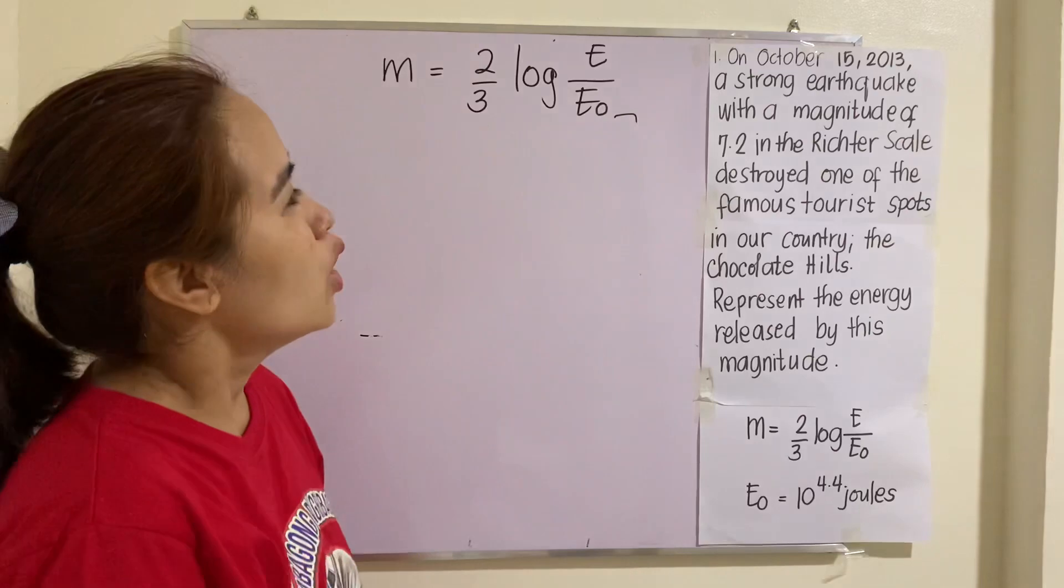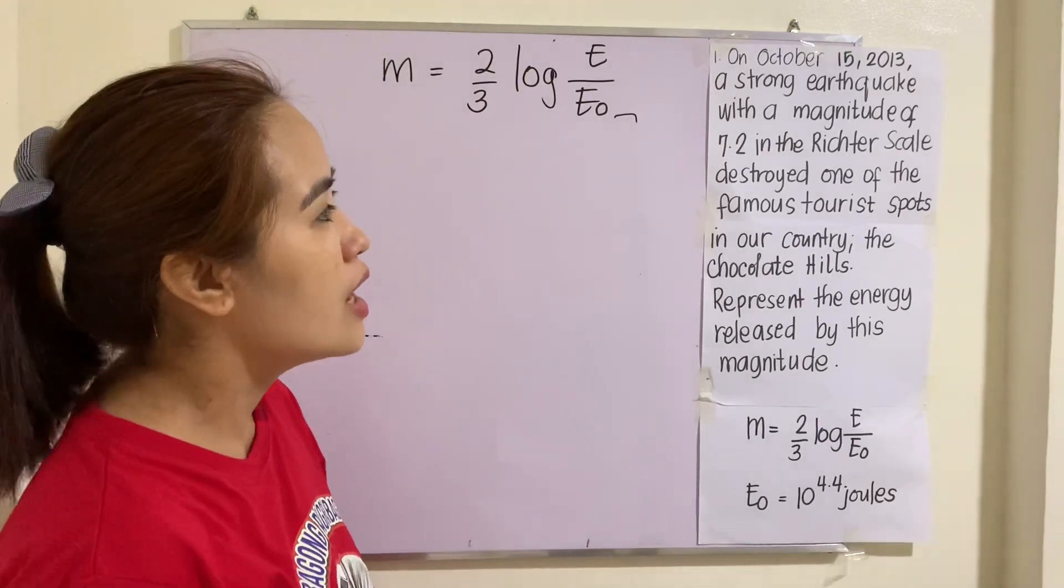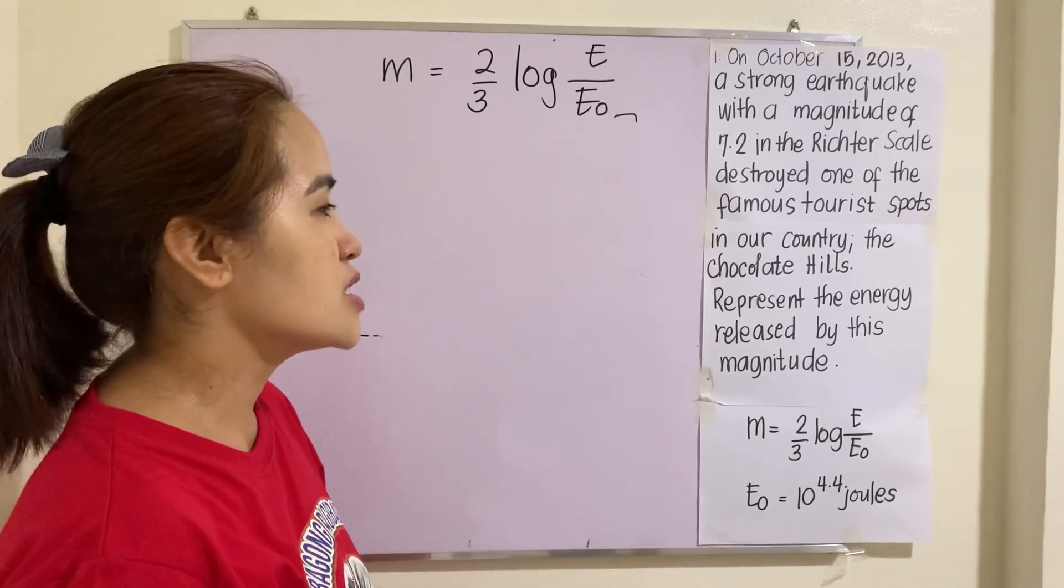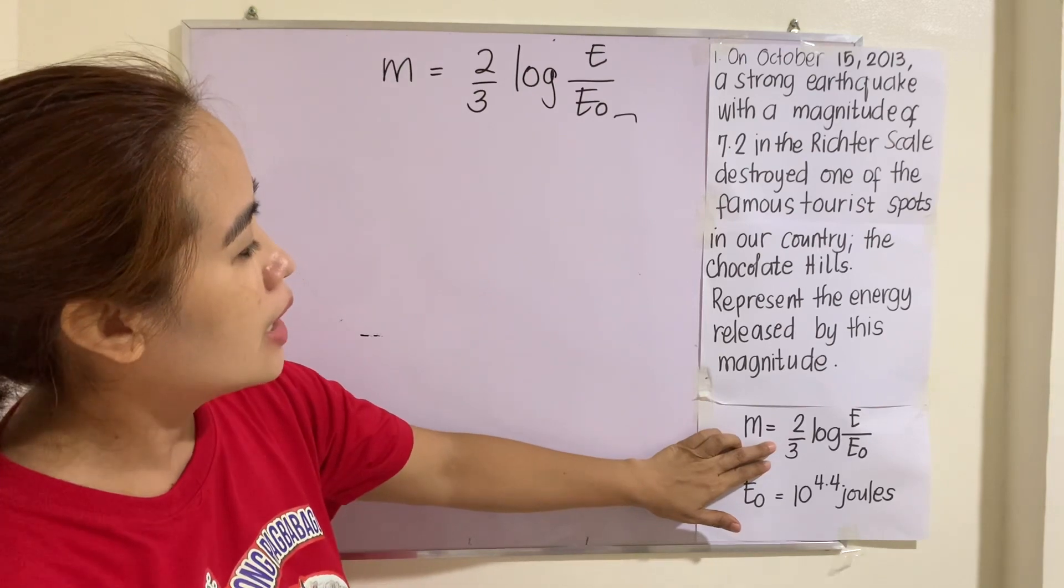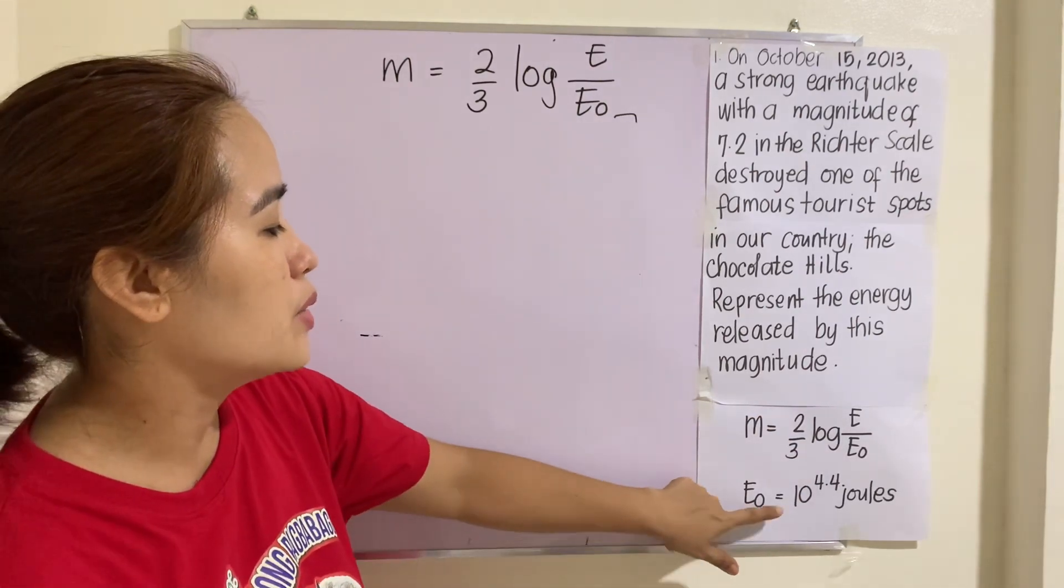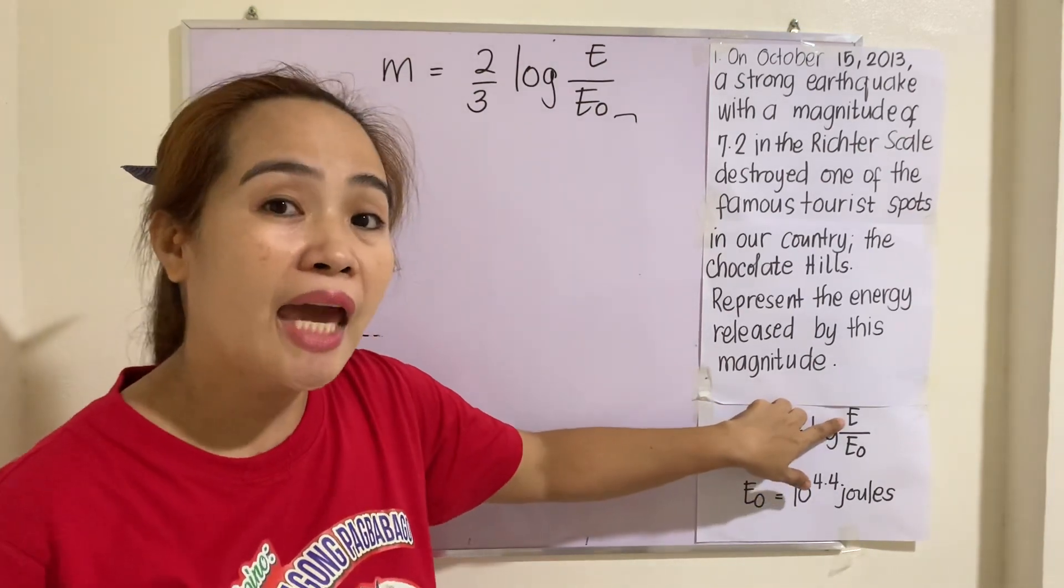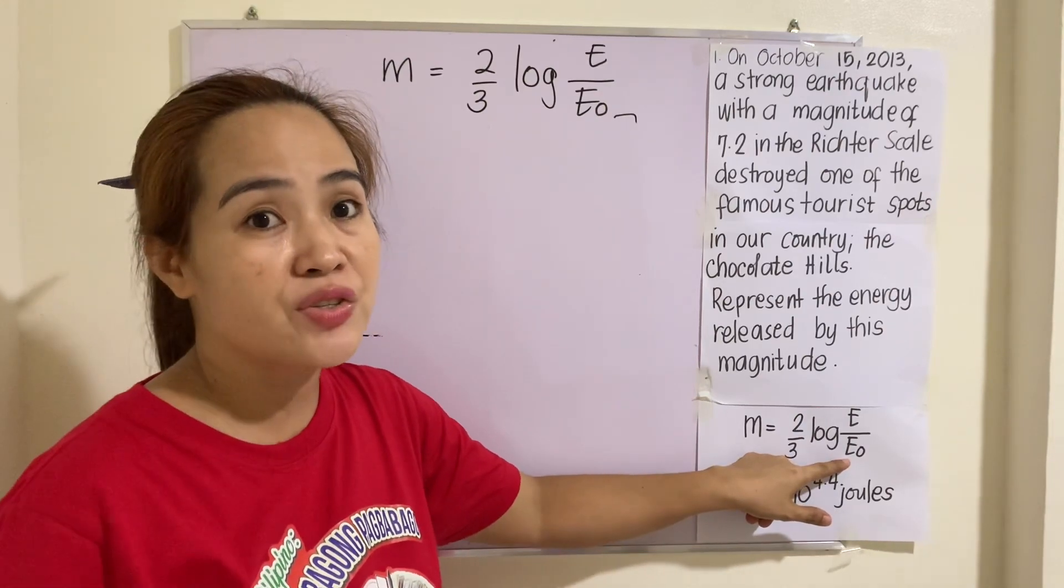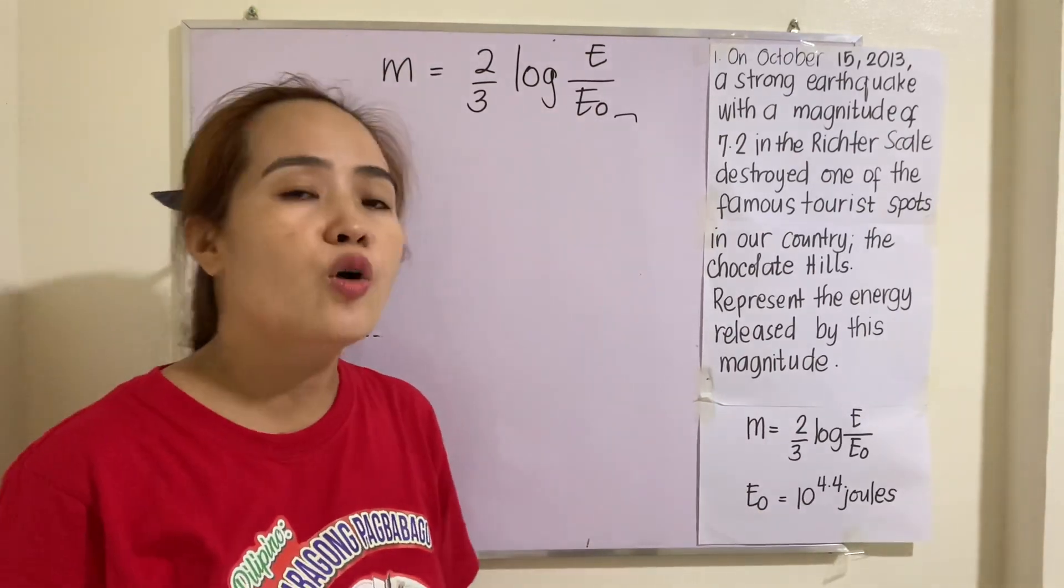Example number 1. On October 15, 2013, a strong earthquake with a magnitude of 7.2 in the Richter scale destroyed one of the famous tourist spots in our country, the chocolate hills. Represent the energy released by this magnitude. The magnitude is given by this formula. M = (2/3)log(E/E_0). And E_0 = 10^4.4 joules. By the way, this E here is the energy released by the earthquake. And this E_0 here is the energy released by a certain reference point. And that is equivalent to 10^4.4 joules.